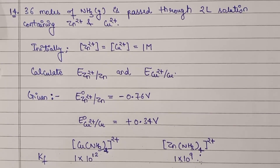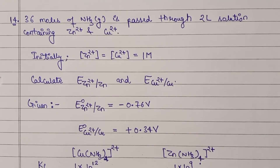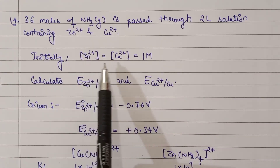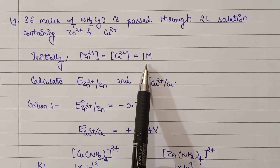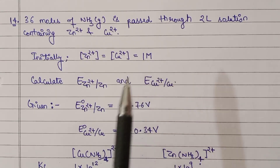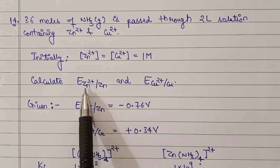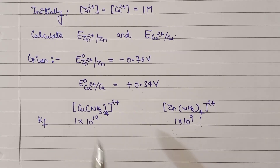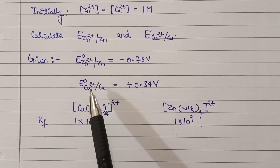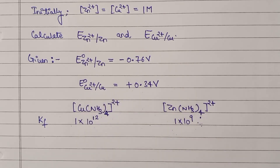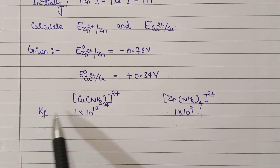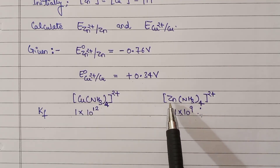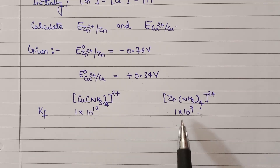Problem number 14: 36 moles of ammonia gas is passed through a 2-liter solution containing Zn²⁺ and Cu²⁺, both at 1 molar concentration initially. We have to calculate the reduction potential of Zinc and reduction potential of Copper. Standard reduction potentials of Zinc and Copper are given, and the formation constants for the complexes of Copper with Ammonia (10¹²) and Zinc with Ammonia (10⁹) are also given.